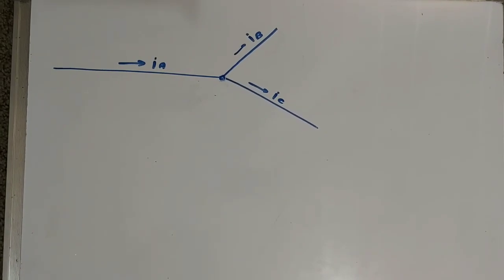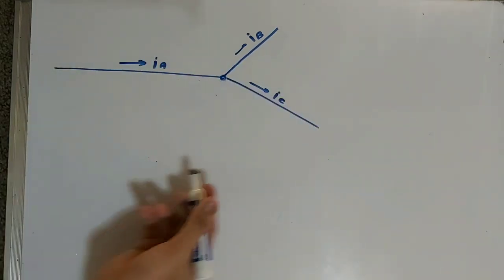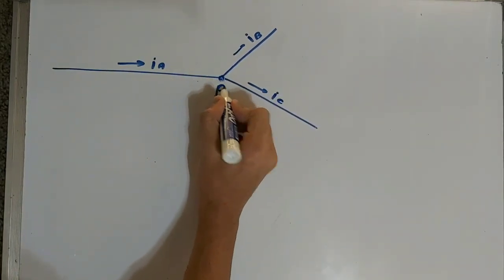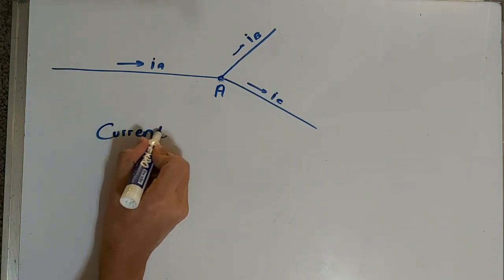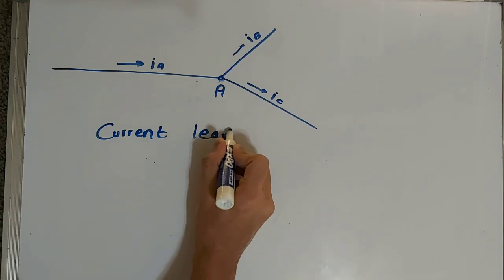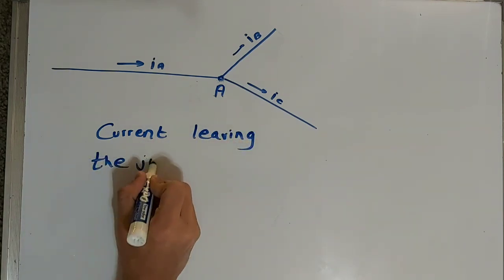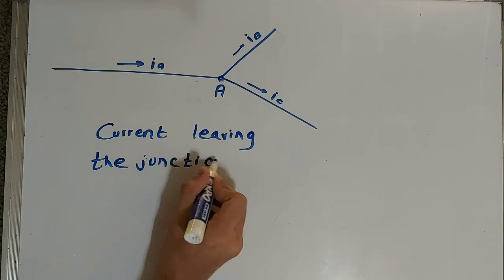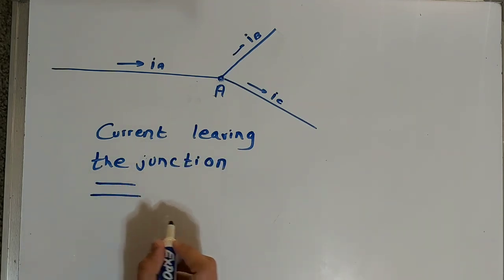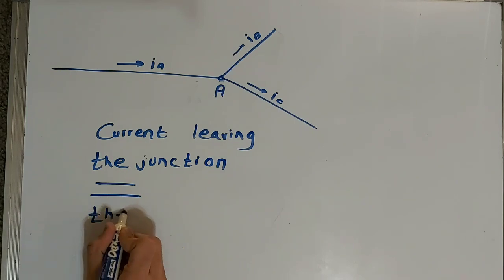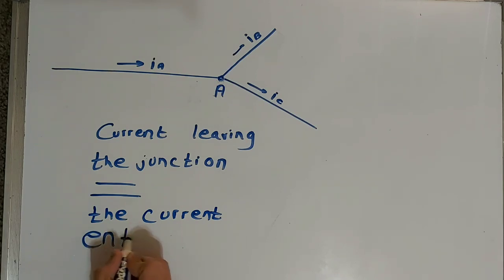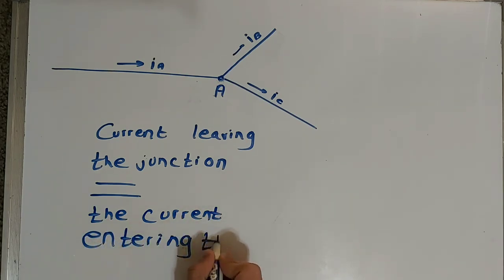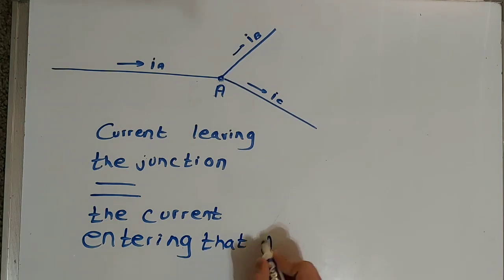Let's try to understand Kirchhoff's current law and Kirchhoff's voltage law in this video. This is a normal wiring setup and this is what I call a junction — let us call it junction A. So what does Kirchhoff's current law say? The current leaving the junction is equal to the current entering that junction.